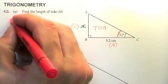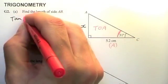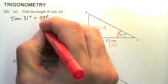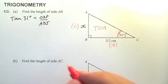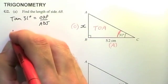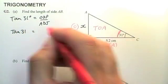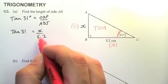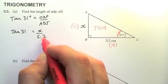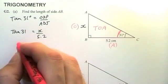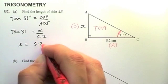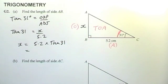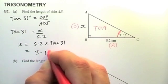So with TOA, T for tan, tan of the angle which is 31 degrees equals opposite over adjacent. I write that down first, then I actually substitute in my values, so it's tan 31 equals the opposite is X divided by the adjacent is 5.2. Now I've got X divided by 5.2, so if I want to work out what X is, I've got to multiply across by 5.2, so X is actually 5.2 times tan of 31.